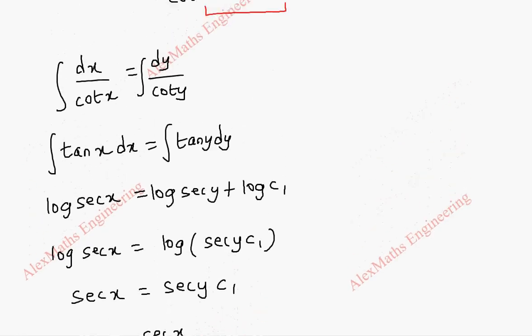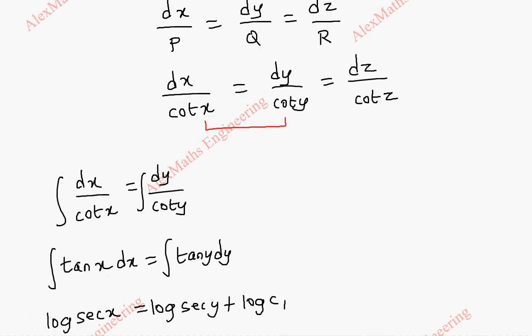The same way, we are taking another two terms, dy by cot y equal to dz by cot z. Let's integrate on both sides.